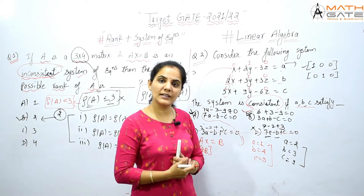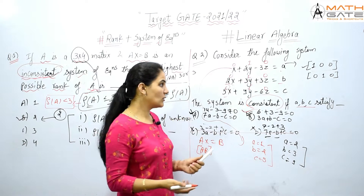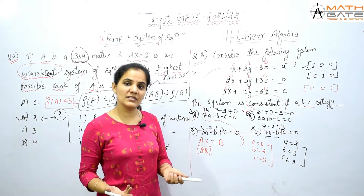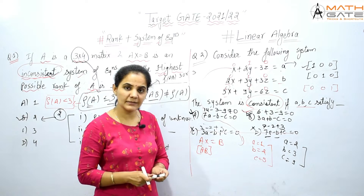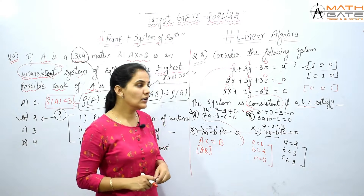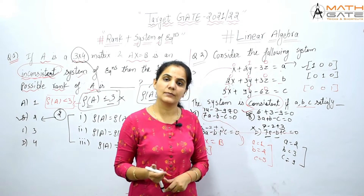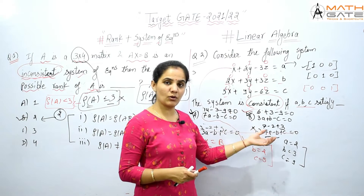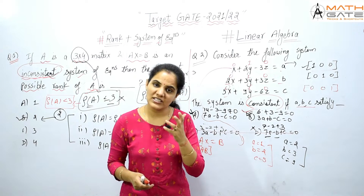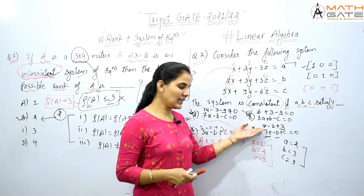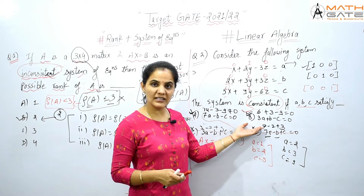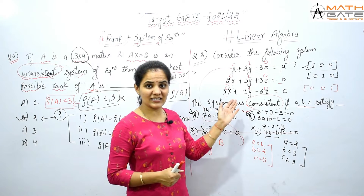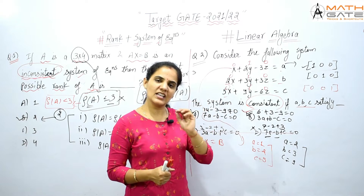Smart approach used — I assumed roots and checked. Roots taken were (1,0,0) and (0,1,0). If you want, you can take (0,0,1) as another root, but it's not necessary because in just two steps we already have clarity. The right answer was found quickly. This question can be done within 10 seconds — no calculation needed, you can see it verbally.